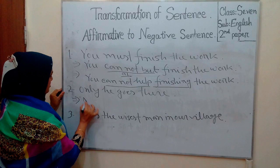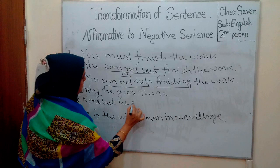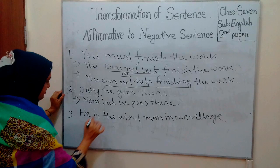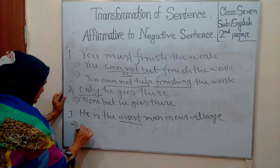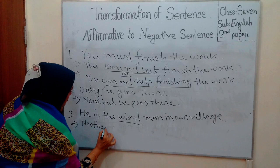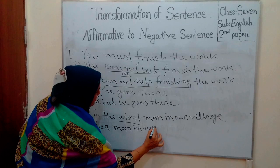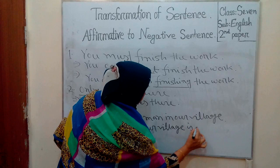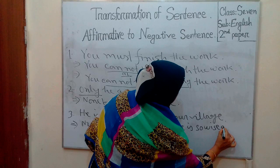Rule 3, superlative to positive degree negative sentence: 'No other man in our village is so rich as he.'